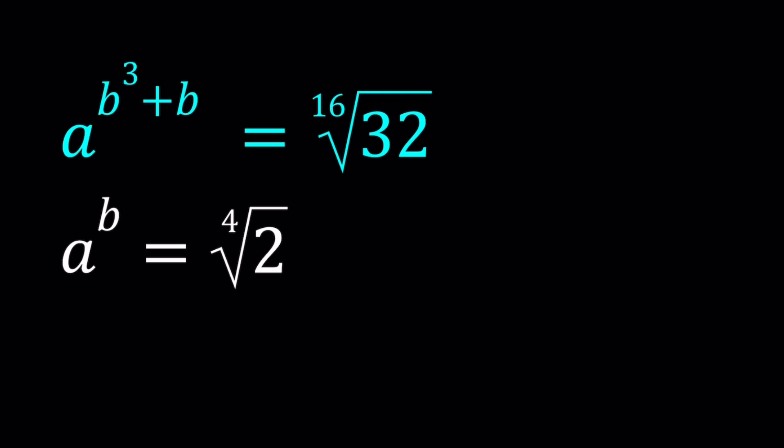So, first of all, I want you to note one thing. We have b cubed plus b, and that can be written as b times b squared plus 1. So that's the idea we're going to use to solve this system.